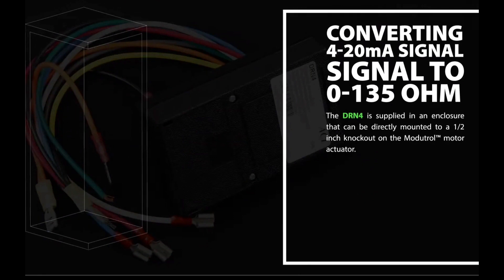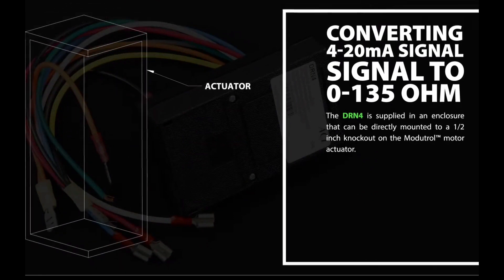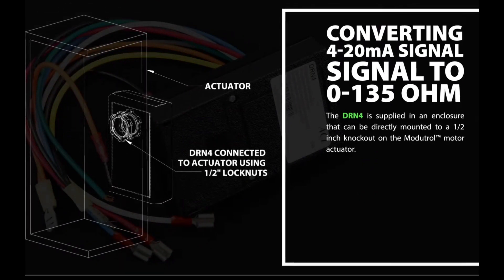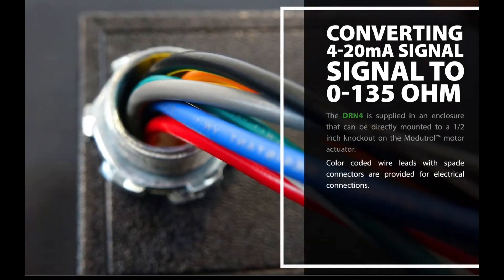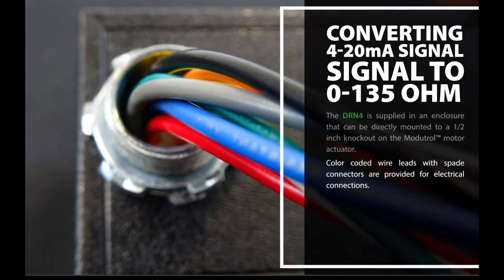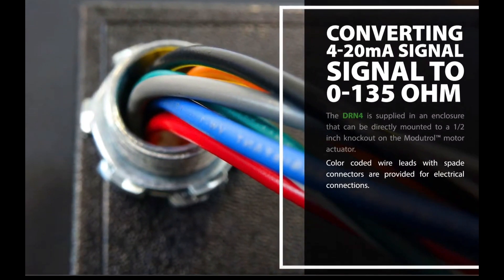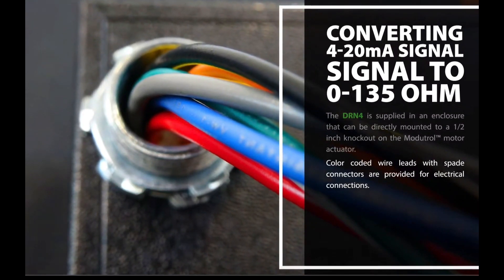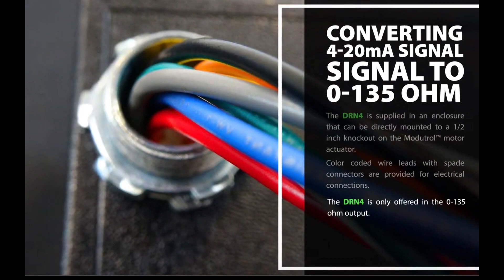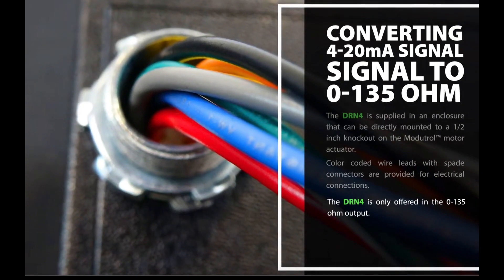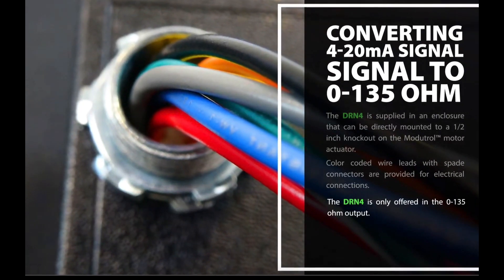The DRN 4 is supplied in an enclosure that can be directly mounted to a half inch knockout on the Moditrol motor actuator. Color coded wire leads with spade connectors are provided for electrical connections. The DRN 4 is only offered in the 0 to 135 ohm output.